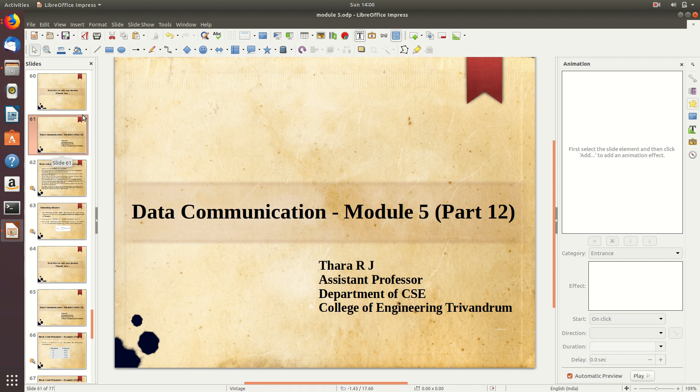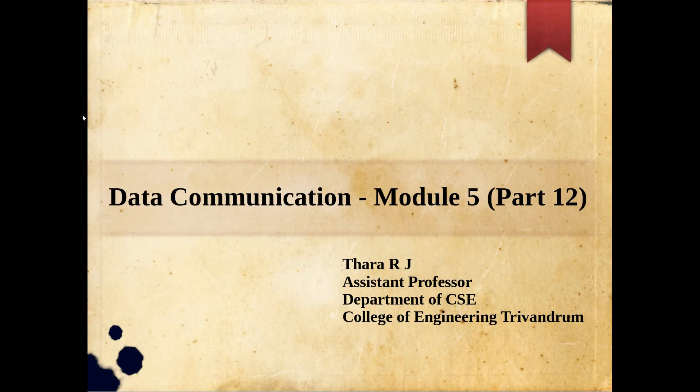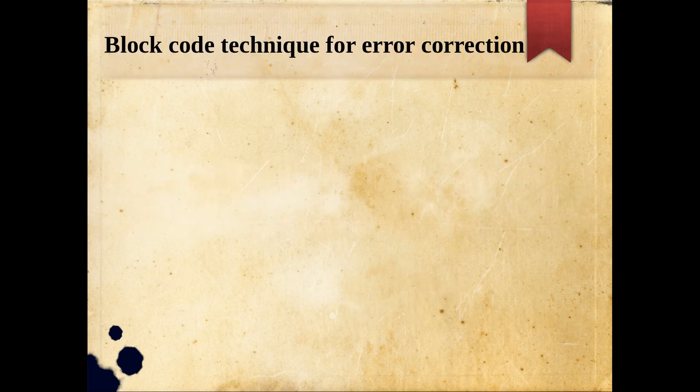Welcome to Part 12, Module 5: Data Communication. In Part 11 we started our discussion on error correction schemes — particularly the general block diagram of error correction and why we need to perform correction. Now we will move on to the block code technique for error correction. The idea is that the information you want to communicate is divided into blocks of k bits, and to that k-bit block we append redundancy to generate the codeword, as seen in the previous discussion.